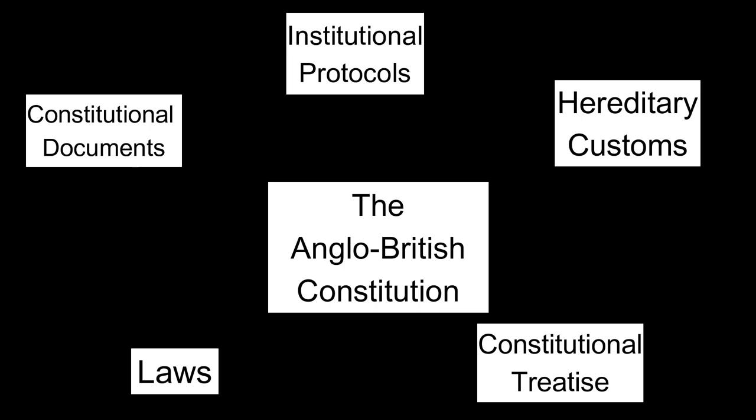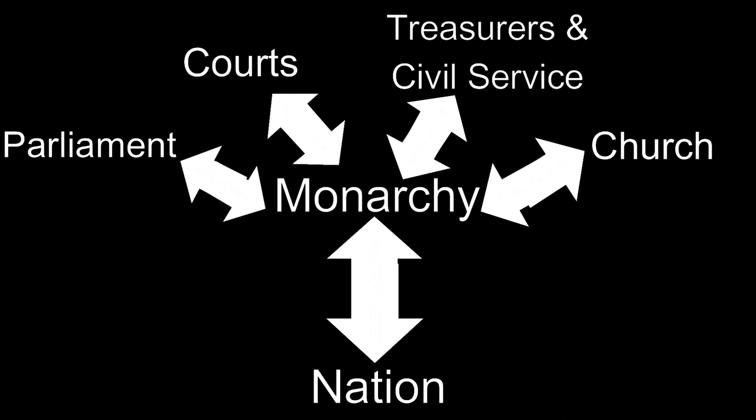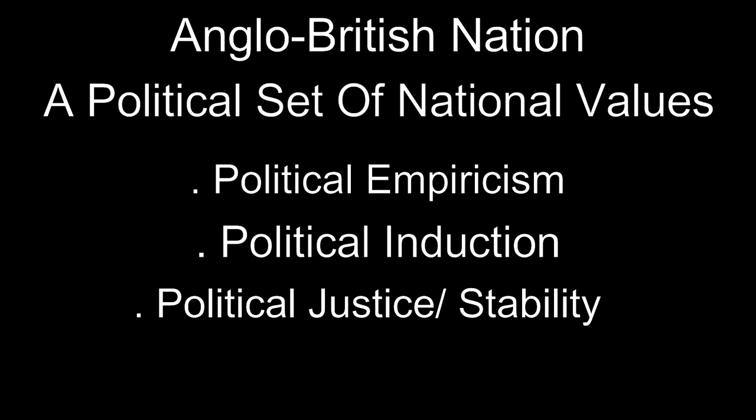In part one, I defined the Anglo-British Constitution and then tried to offer perspectives to give an understanding of its genealogy and nature. We saw how the Anglo-British Constitution is the institutionalized nationalism, by which I mean the core values of the Anglo-British, which can be summarized as a societal methodology including political empiricism, induction and justice. This is a society thus aligned with reality, with human nature, with the world as it is and the specific culture via history of the Anglo-British. The result of all of this being a society that is stable and functional.